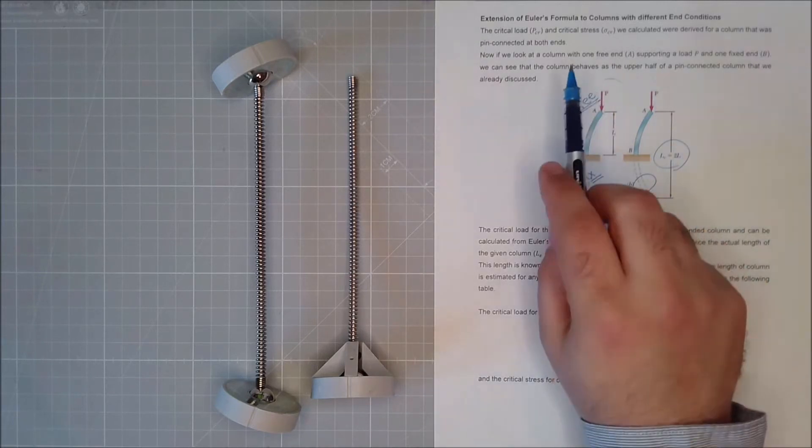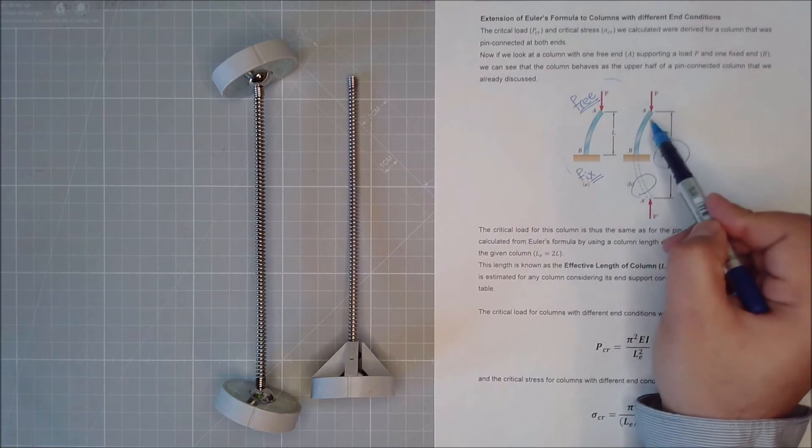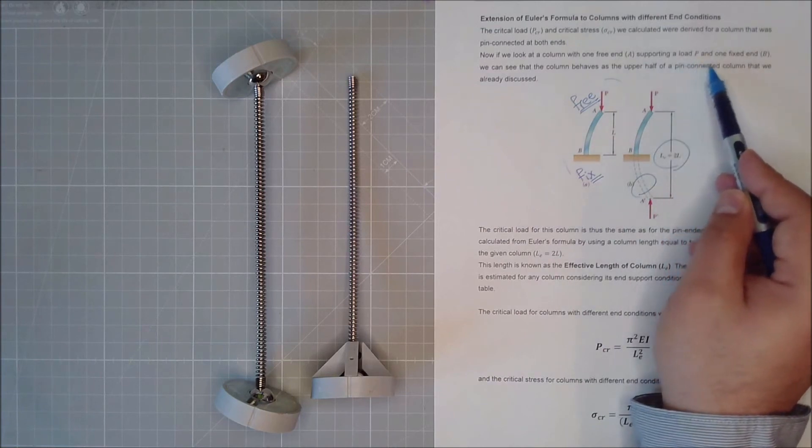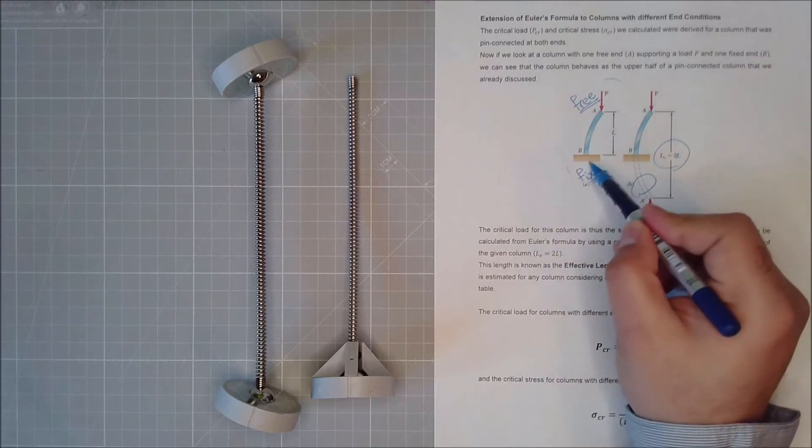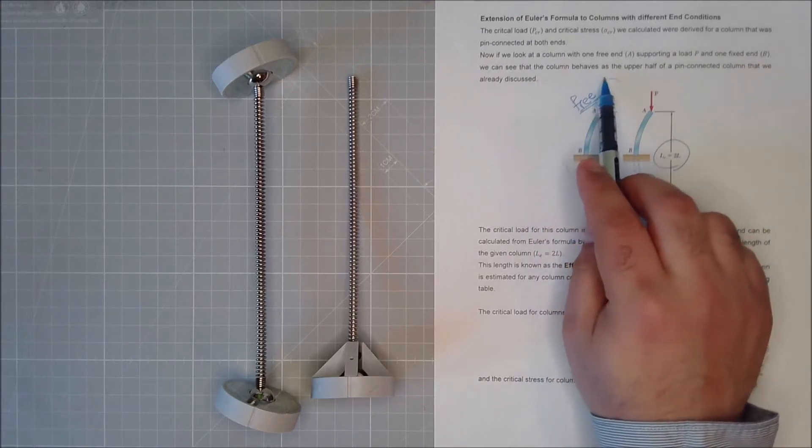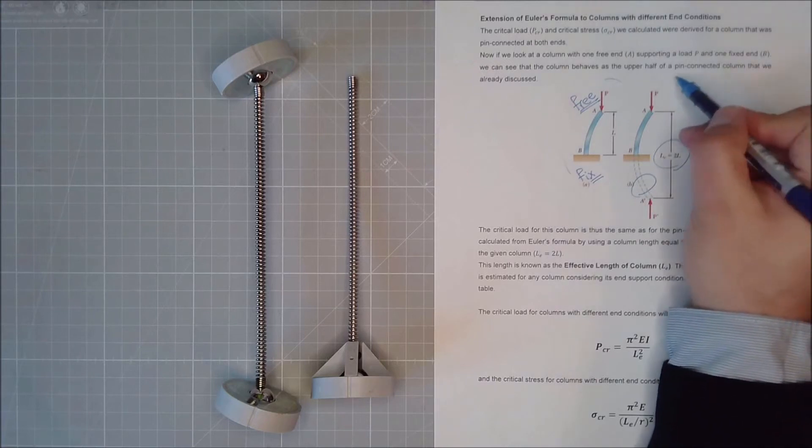So we look at the column with a one free end at point A and a load P and one fixed end at point B, so it's the ground. We can see that the column behaves as the upper half of the pin connected column that we just saw.